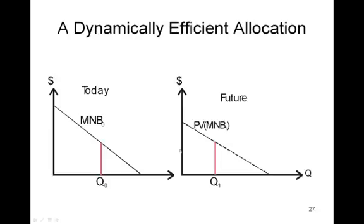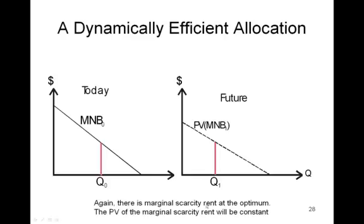Just as in the static case, efficiency is achieved in the same way. But here we're comparing the marginal benefit today versus the present value of the marginal net benefit in the future. When the marginal scarcity rents — current and present value — are equal, then the dynamically efficient allocation results. That's really all there is to it. Dynamic efficiency is achieved when the present value of the marginal net benefits at any point in time equals the marginal net benefits today. Marginal scarcity rent will occur if there's not enough resources to satisfy every generation's demand.